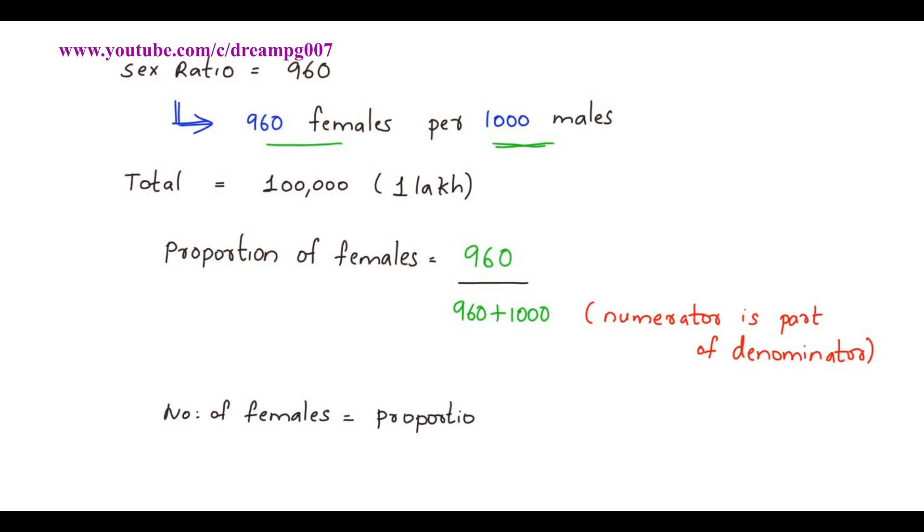Hence number of females is calculated by formula: proportion of females multiplied by total population.